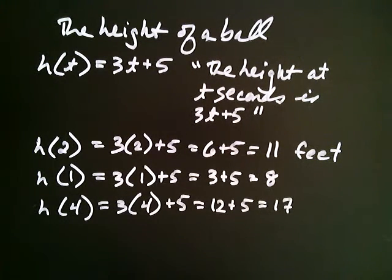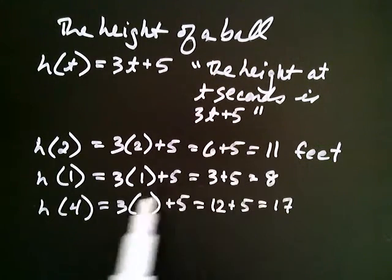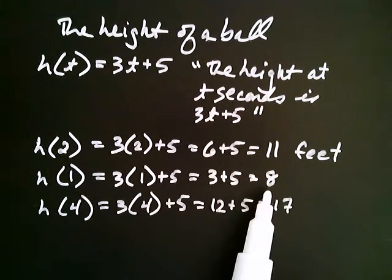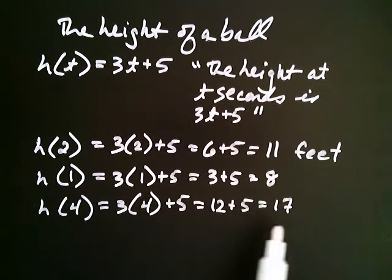In these three examples I just gave you, we knew what the time was. The time was 2, the height was 11. The time was 1, the height was 8. The time was 4, the height was 17.